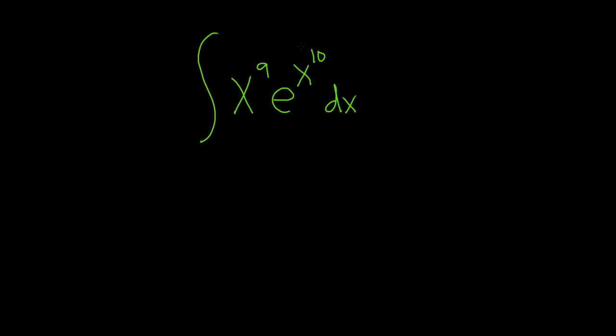The first thing we should try in a problem like this is a u-substitution. We can try to let u be this piece here. The reason for that choice is when you take the derivative of x to the tenth, you're going to get x to the ninth in some sense.